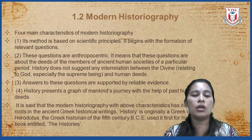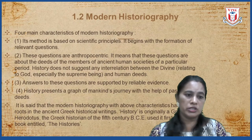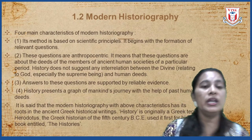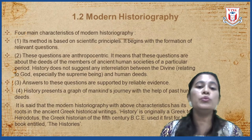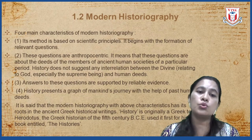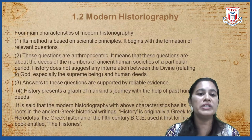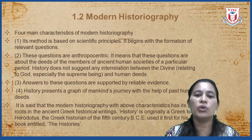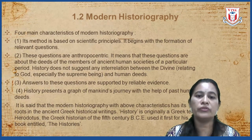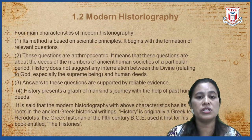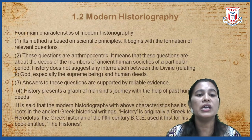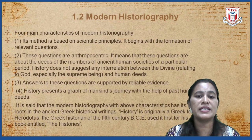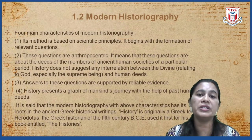So how was modern historiography different from that ancient historiography? There were four main characteristics of modern historiography. It was more mainly based on scientific principles. It began with those questions — that is how historiography was written. These questions are anthropocentric, which means these questions are about the deeds of human societies of a particular period.